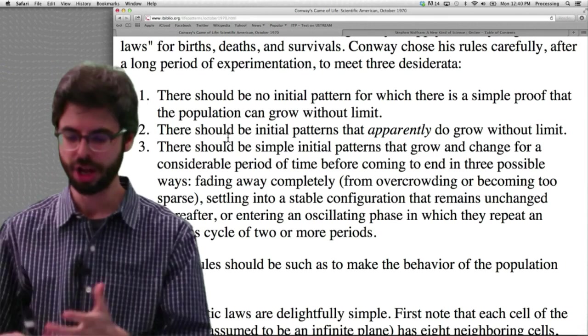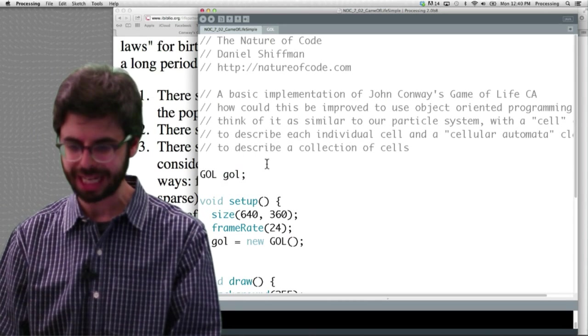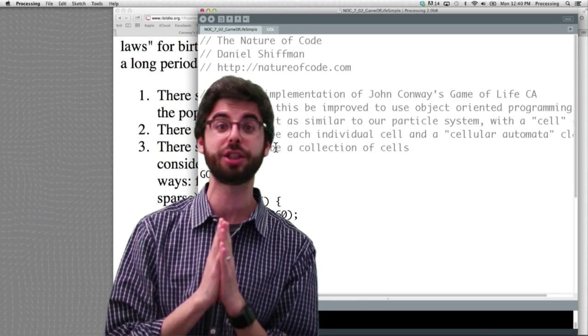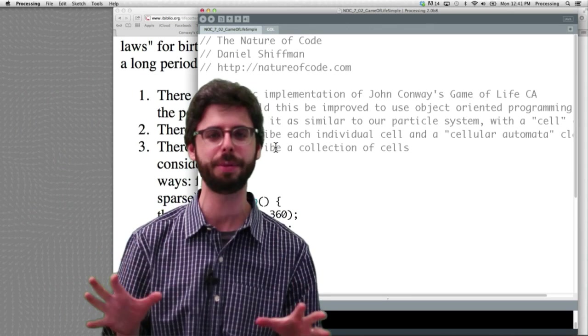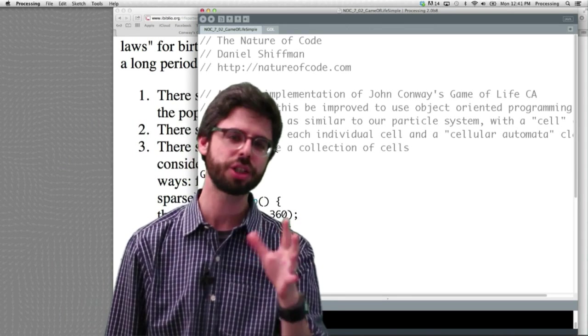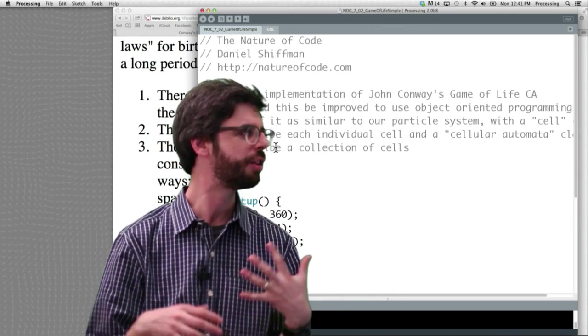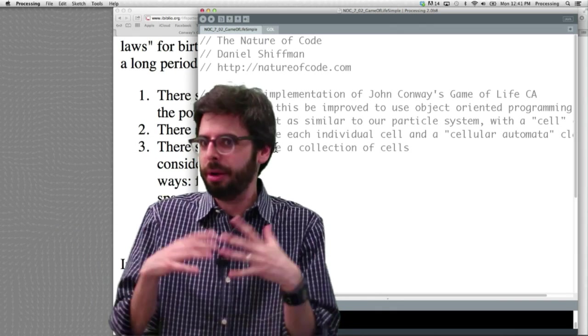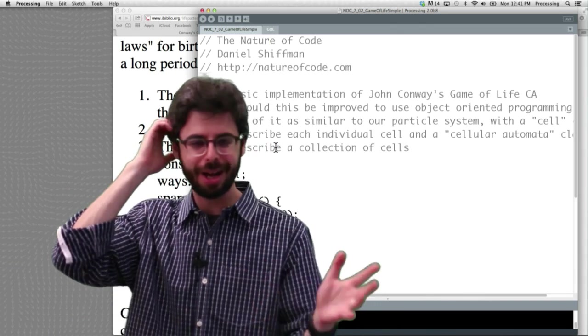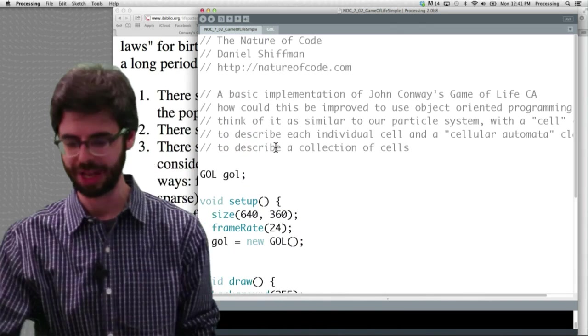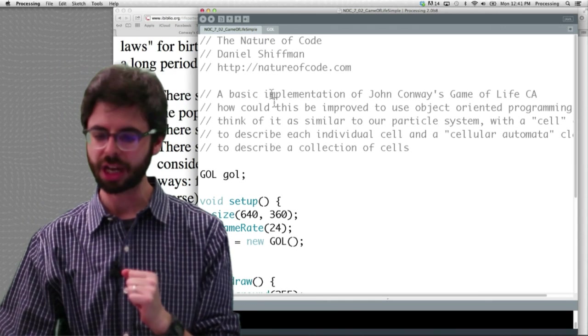So let's take a look at how that works in processing. So the example that we're looking at here is example 7.2. This is a very simple implementation of Game of Life. And we're going to talk about a couple more things that we could add to it to make it a little bit more difficult to program, but more useful, perhaps, as well.